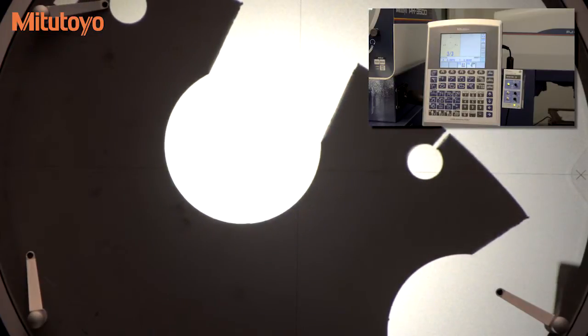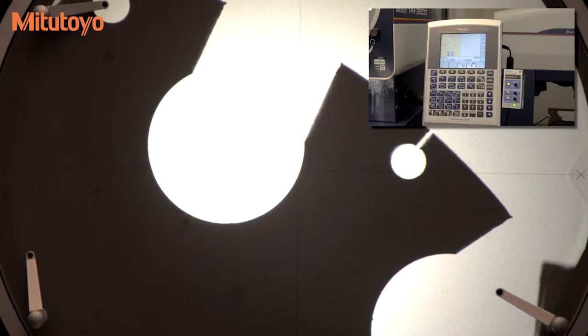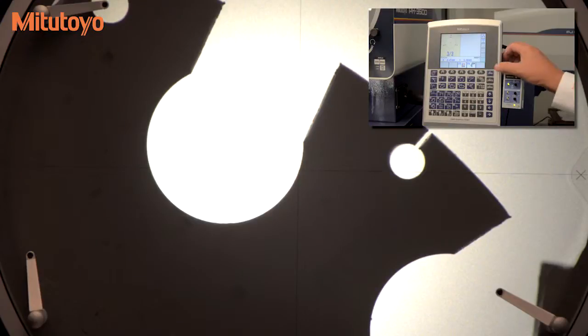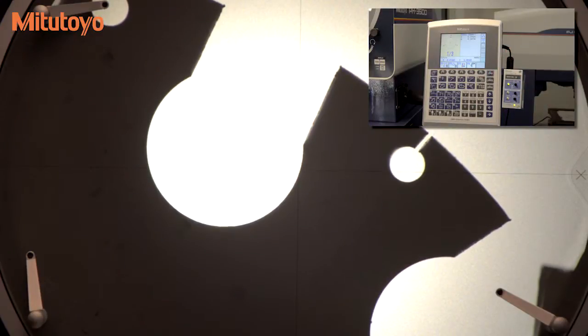Here we are entering the points using the load key. In this case, the third point automatically triggers the start of the second circle.